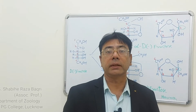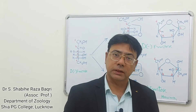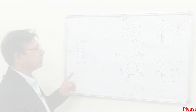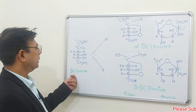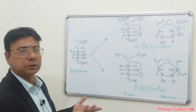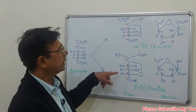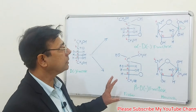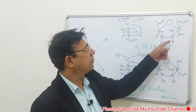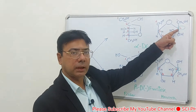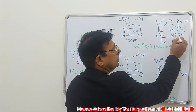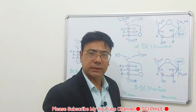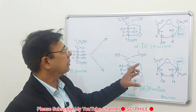Now let us apply these rules to fructose. In the open chain structure, fructose is a ketose sugar. It forms two anomers: alpha D-minus fructose and beta D-minus fructose. They differ from each other with respect to the anomeric carbon — in alpha, the OH is down and in beta D-minus fructose the OH is up.